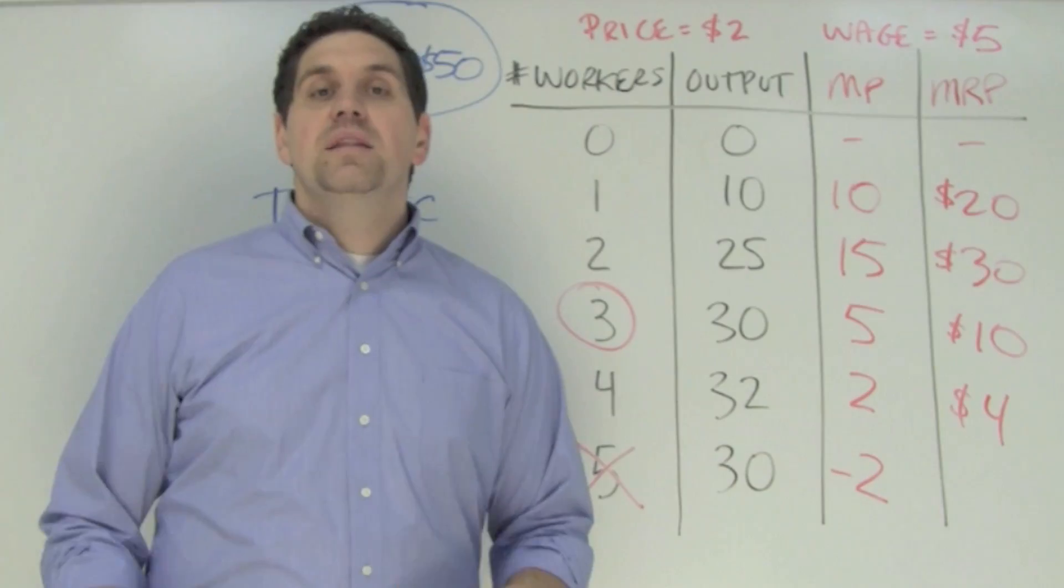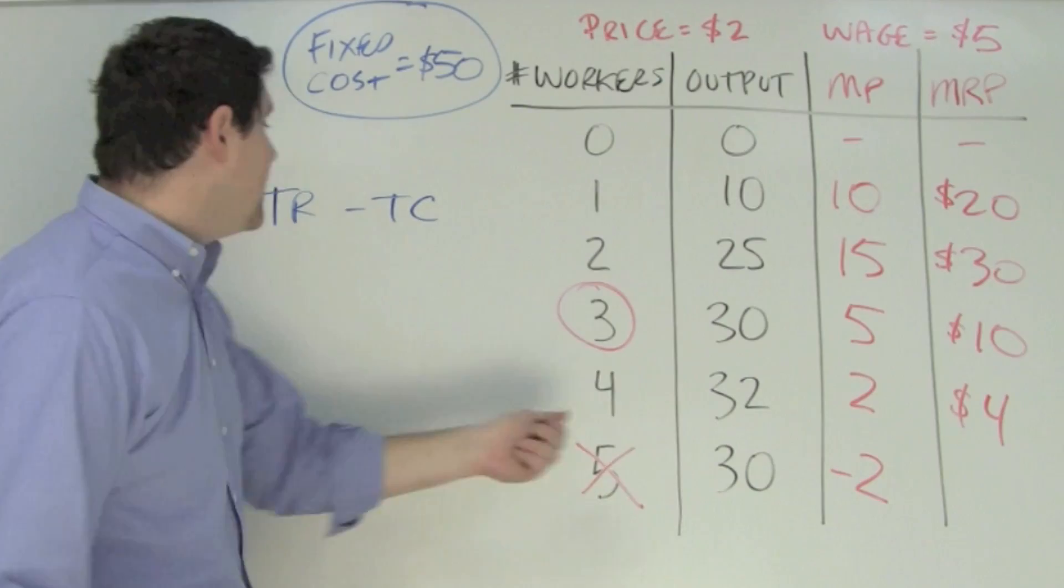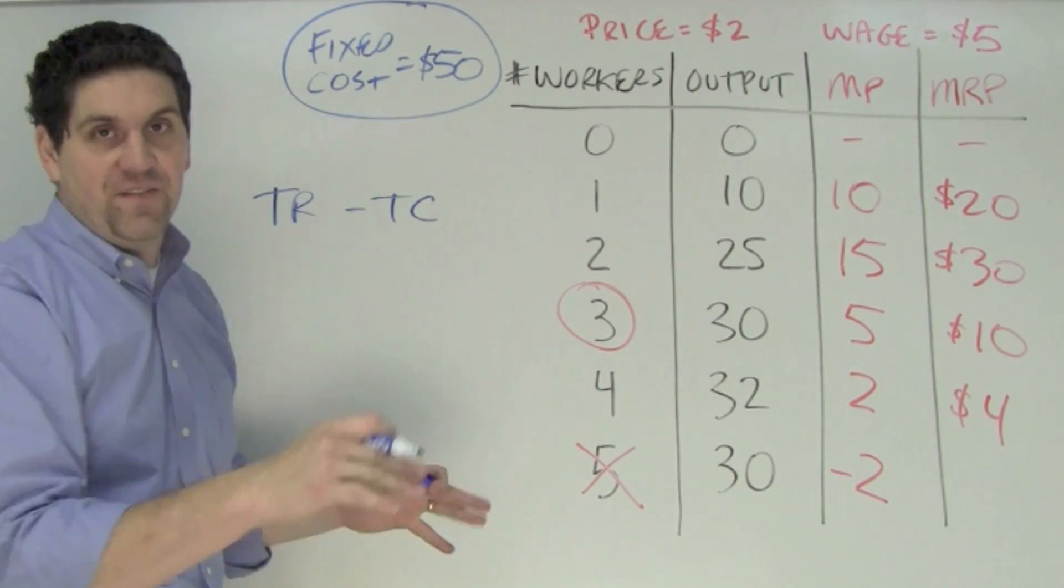Bonus round! Let's figure out how to calculate profit from hiring three workers. Now profit is the total revenue minus total cost, and I'm giving you in this situation a fixed cost of $50.